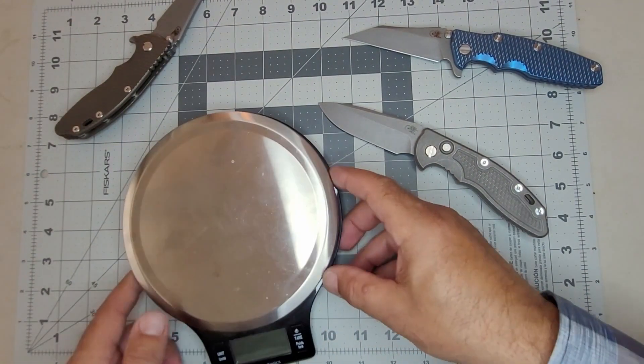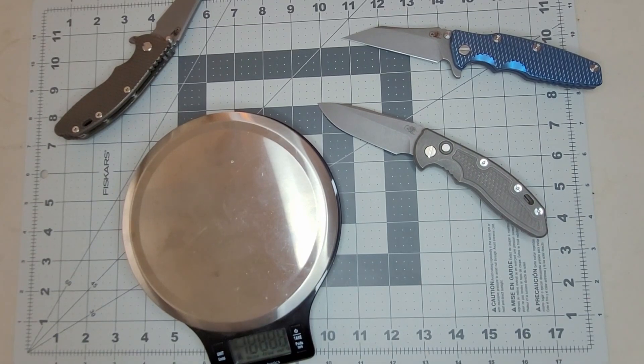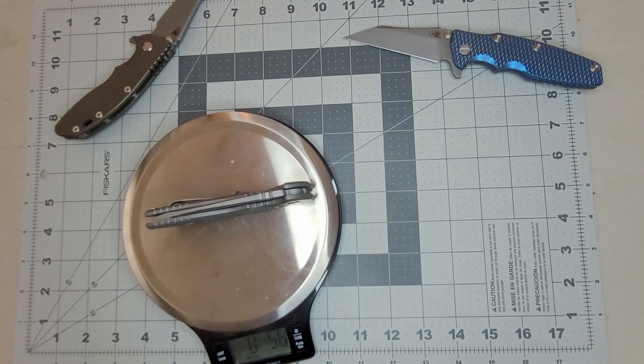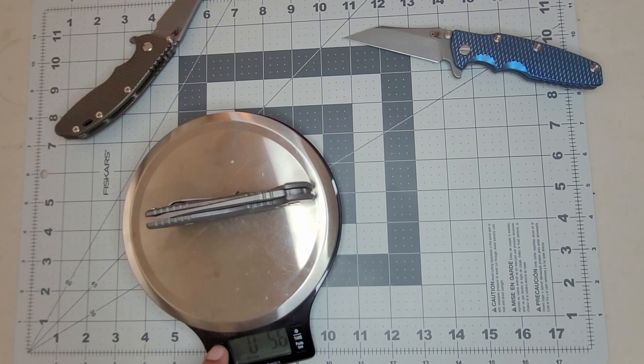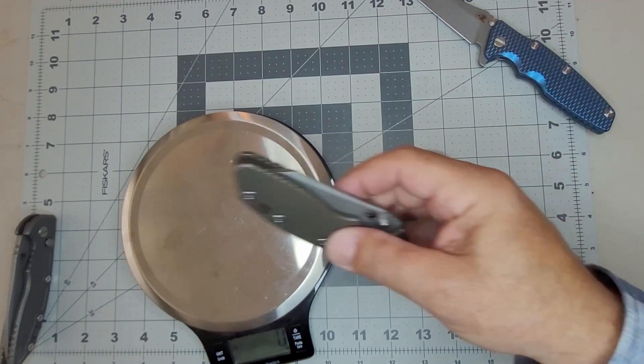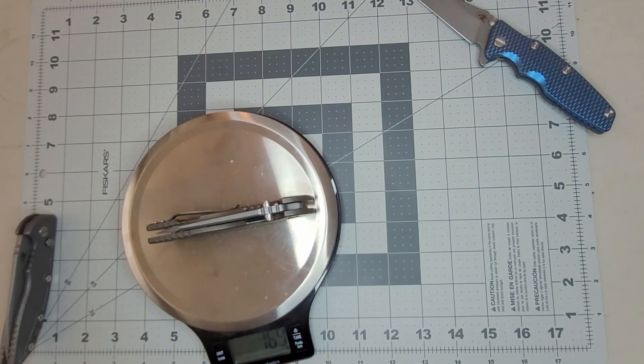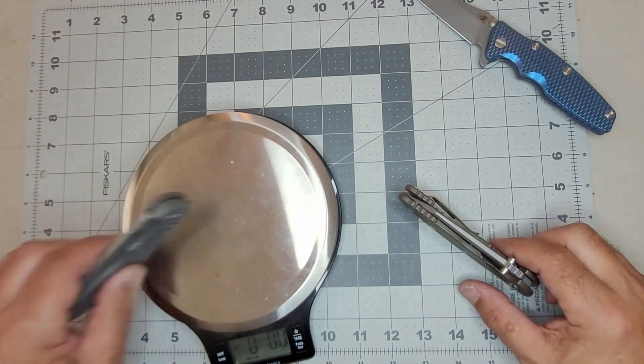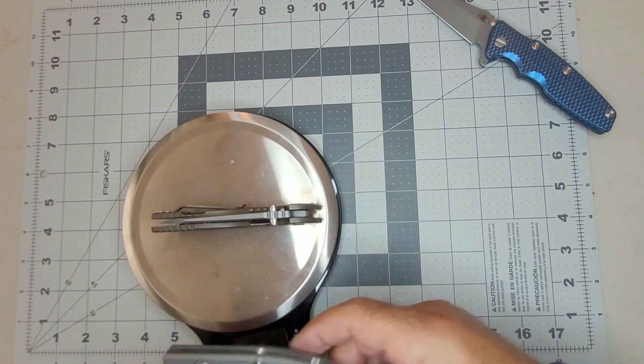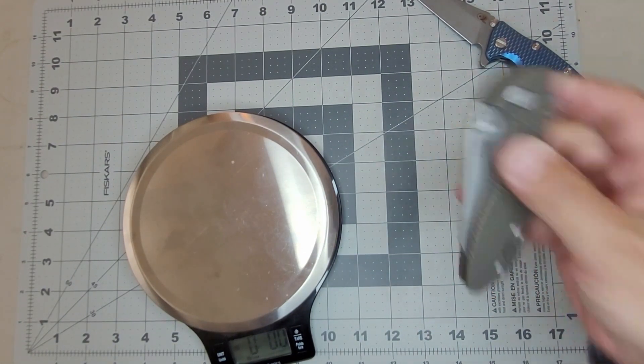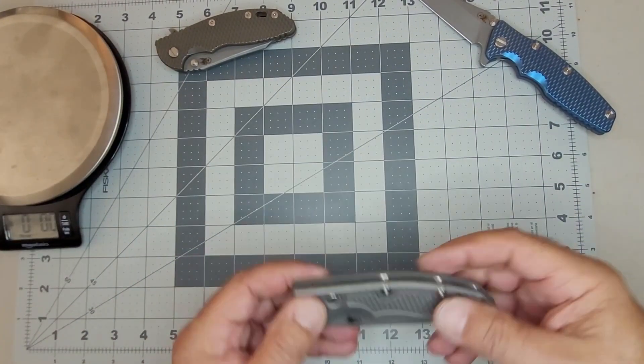Let's go ahead and check out the weight. This is 5.6 ounces or 159 grams. This XM is a fatty. Let's see, 169 and six ounces. Check that out, 5.6 versus six. I do like the weight of this one.